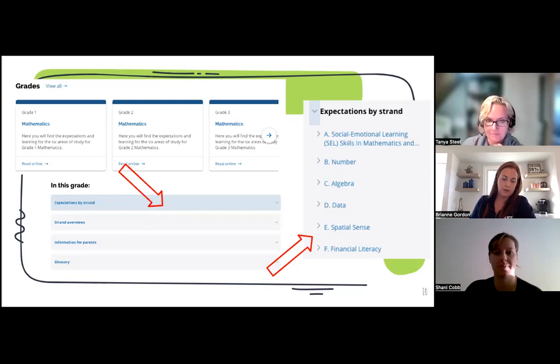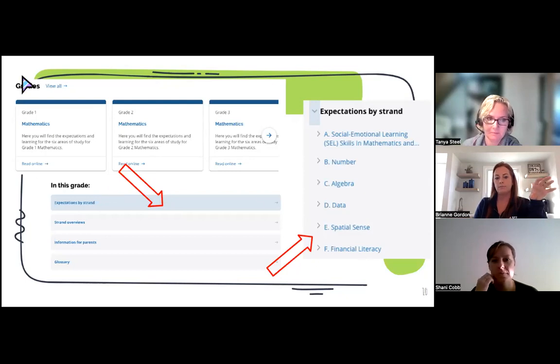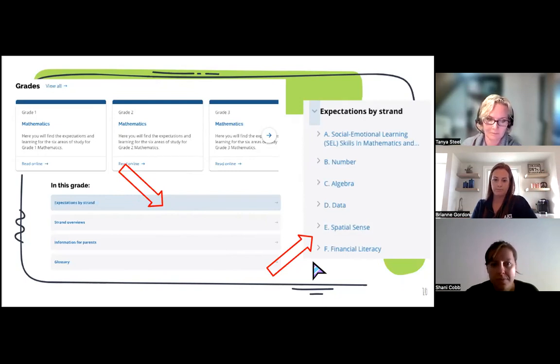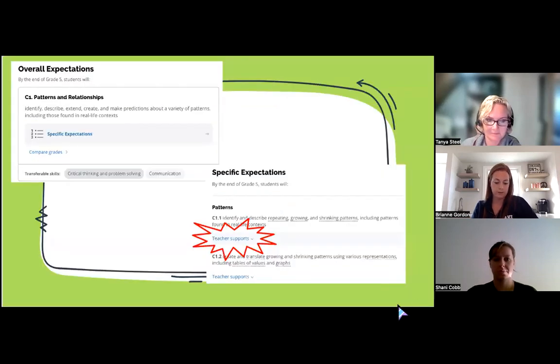So the grades you'll see in the center of that home page. Once you've clicked on your grade level, it will pop up to an in this grade section. Today we're going to look closer at the expectations by strand. So once you've clicked on that, there's all your expectations by strand. There's information for parents in the glossary, and we're just going to click on the strand that we want to highlight, not that there's one specific, but we'll show you some examples today.